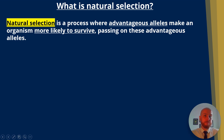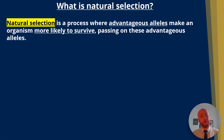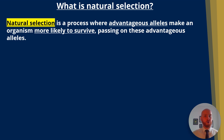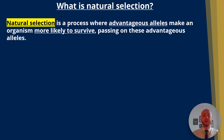Remember from previous videos, an allele is a different version of a gene. In this case it could be a colour of fur that blends in with the surroundings a bit better, or with a beetle it could be that its shell blends in with the bark or soil it lives on, preventing it from being eaten by birds — so that organism is more likely to survive and pass on those brown-coloured alleles.